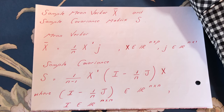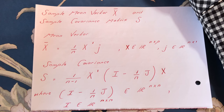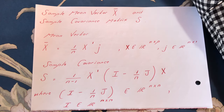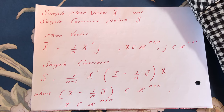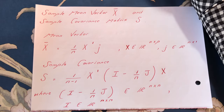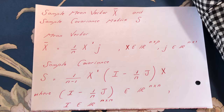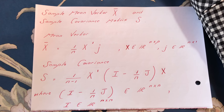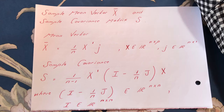The matrix X is an element of R of order n by p, where n is the number of observations — that is the number of rows of matrix X — and p is the number of columns of matrix X, where p represents the number of variables.